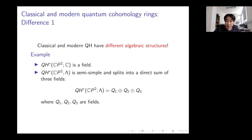There are differences between the two. The first is algebraic structure: for example, the classical quantum cohomology ring of CP² is a field, but the modern one is semi-simple and splits into a direct sum of three fields — so the algebraic structure changes significantly.